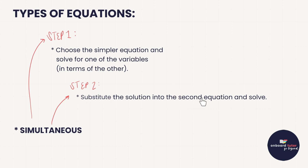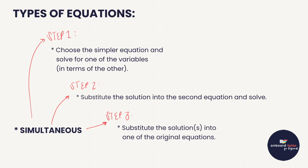Put it into the equation you haven't used yet and then solve. Don't put it into the same equation because you'll just end up going round in circles. Finally, you're going to take the solutions you got and substitute them back into one of the original equations. If you have these steps down, simultaneous equations are going to be a breeze.